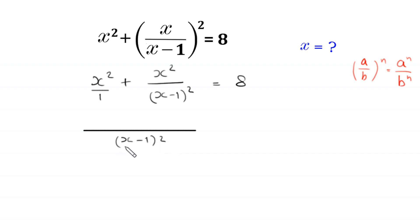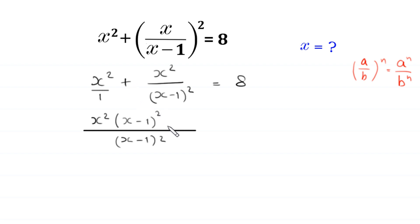We can write the denominator of the x squared term as 1. We take the LCM of denominator 1 and denominator (x minus 1) whole squared. The LCM is (x minus 1) whole squared. When we divide this LCM by 1, we get (x minus 1) whole squared, so we multiply x squared by (x minus 1) whole squared. Then dividing the LCM by (x minus 1) whole squared gives 1, so 1 times x squared gives x squared, and the equation becomes equal to 8.